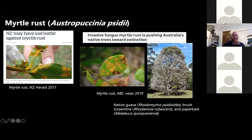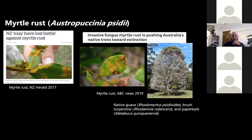Myrtle rust is caused by Austropuccinia psidii. It incurred in New Zealand in 2017 and came to Australia in 2010 — work first described by Jeff Peck and Angus Carnegie. Some species you might know — native brush turpentines, which may actually go extinct because of myrtle rust, and paperbark in Queensland — are threatened by this pathogen. Because it infects so many species, it threatens our ecosystem.